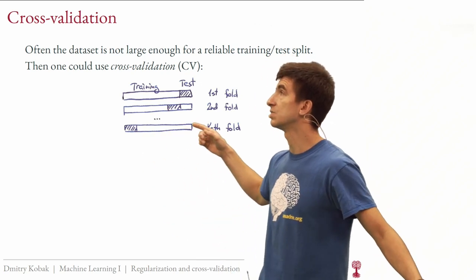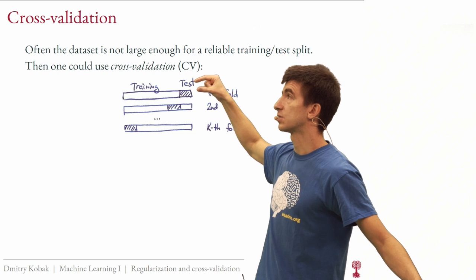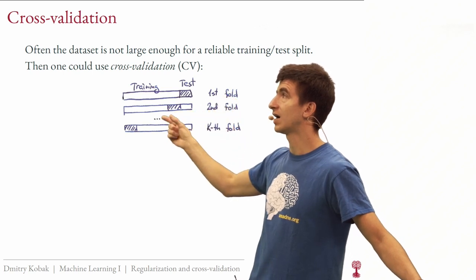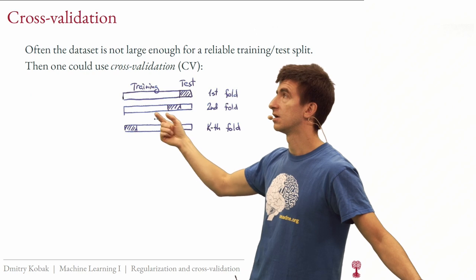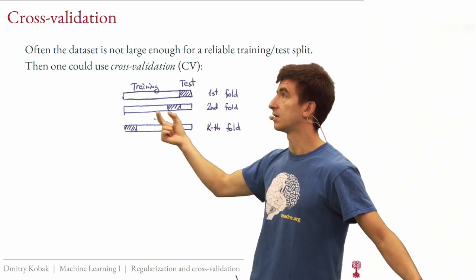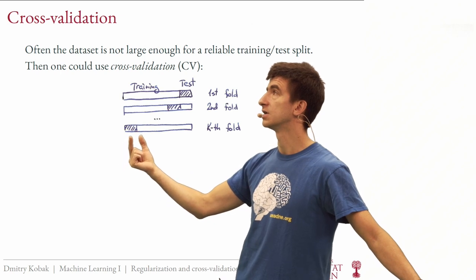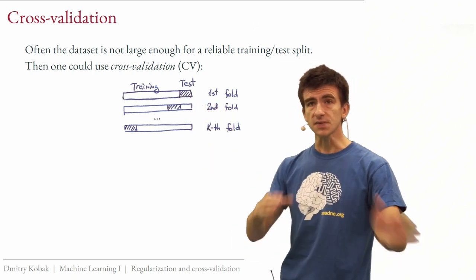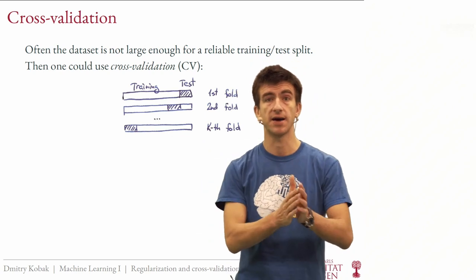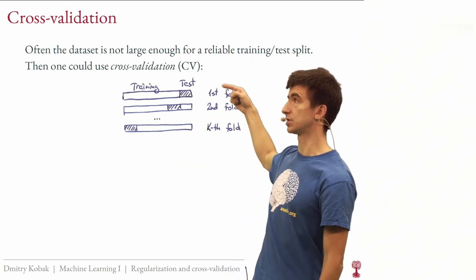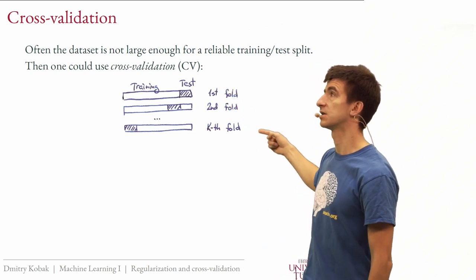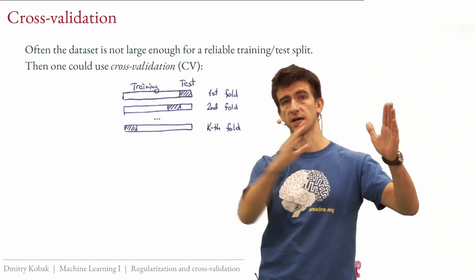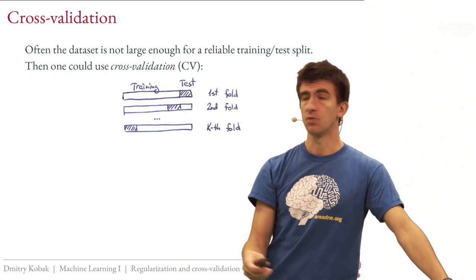Cross-validation means selecting, say, 10% of data as test, running the full procedure, then selecting a different 10% as test and repeating, until every point has been in the test set. Each time you get error estimates for different lambdas; you average these errors across all folds and look for the minimum. This is called k-fold cross-validation. The standard rule of thumb is 10 folds, which is equivalent to 10% test.